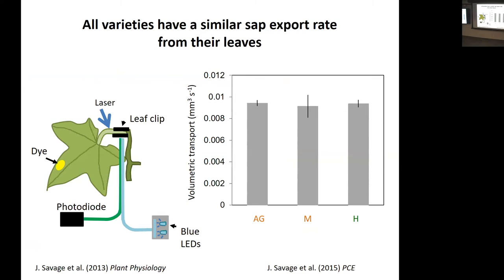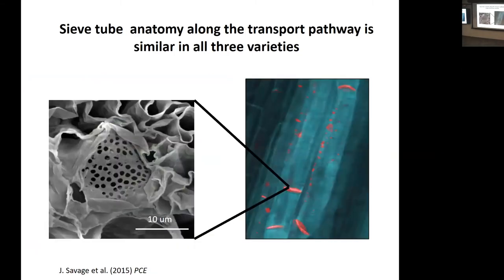There's no difference in carbon export. I also looked at the cells in the phloem — the plates that separate the cells are the same size, same pore size, and the transport cells are the same across all varieties. We're dealing with just one species. So there's a huge difference in fruit growth at the end, but a lot of similarities throughout. What's going on?